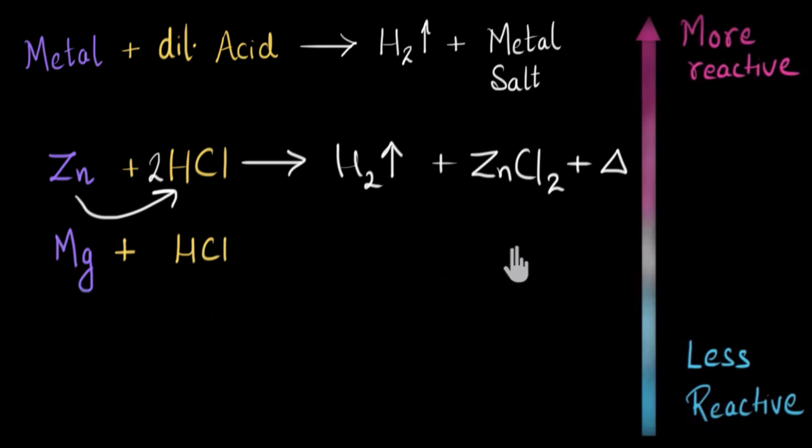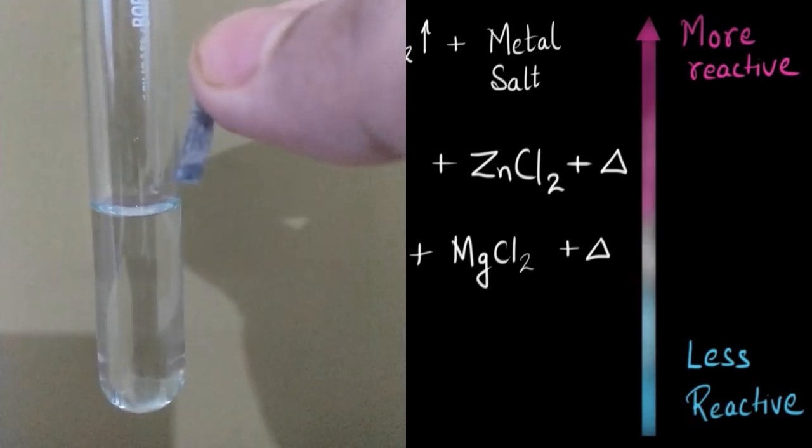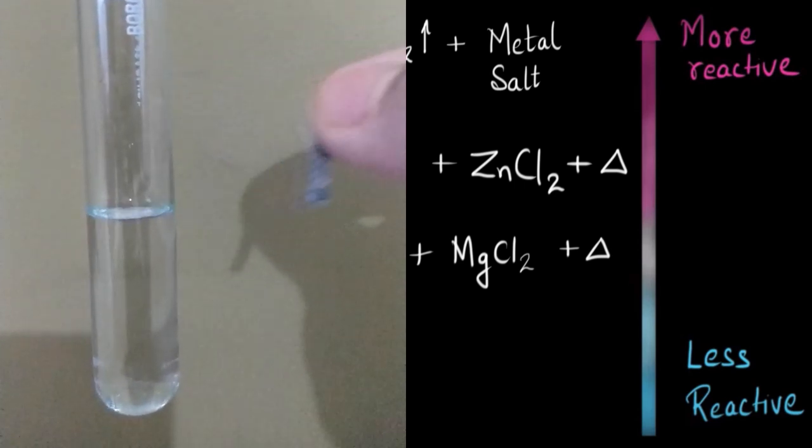And along with this, a lot of heat will be given off. So the products will be this. So let's look at this reaction in an actual experiment. Here, I'm going to add magnesium strips to dilute HCl solution.